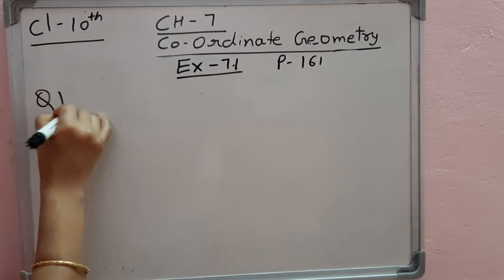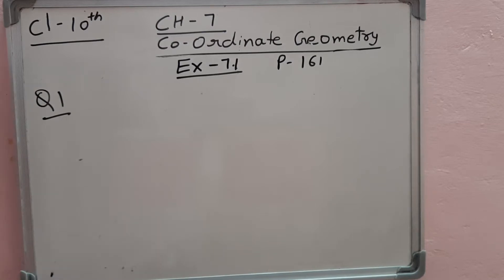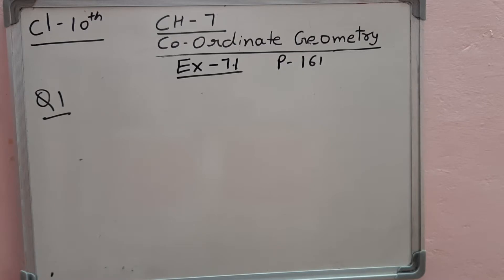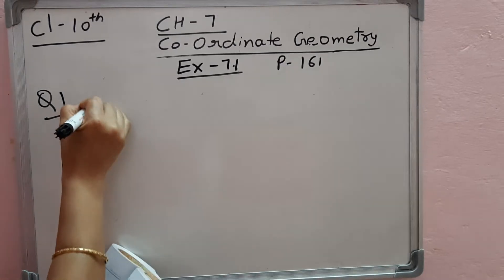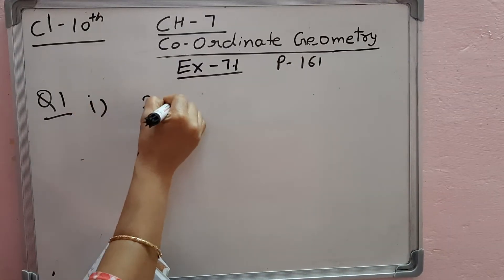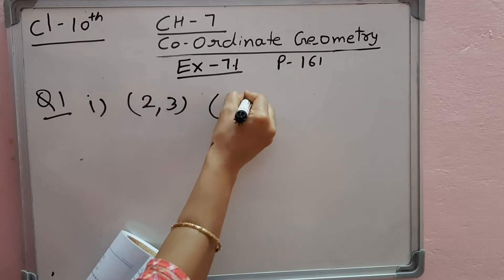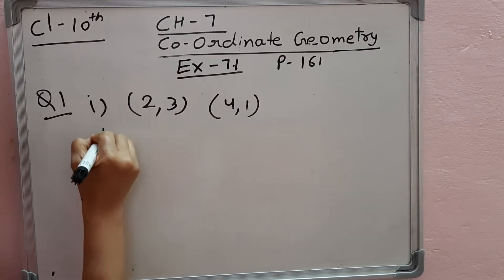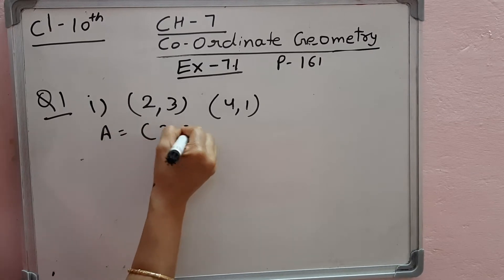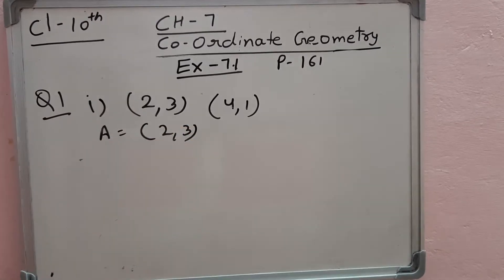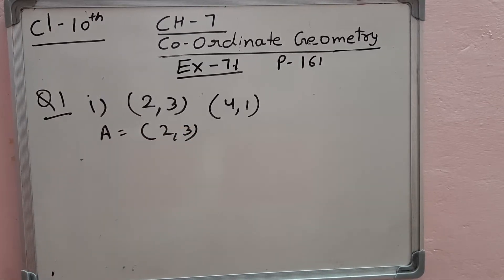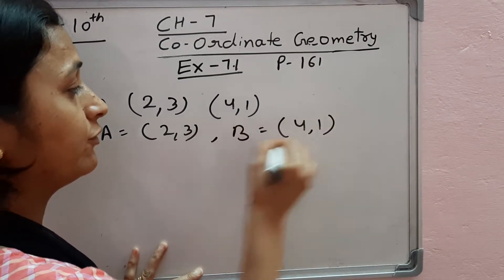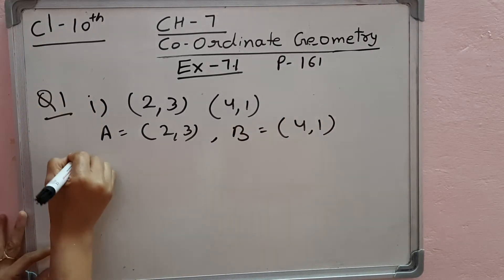So question number 1. In question number 1, three parts are there. So one part I am doing and the remaining two parts you have to do yourself. So the first part: two points are there. The first point is A(2, 3) and the second point is B(4, 1). So we have to find the distance between them.